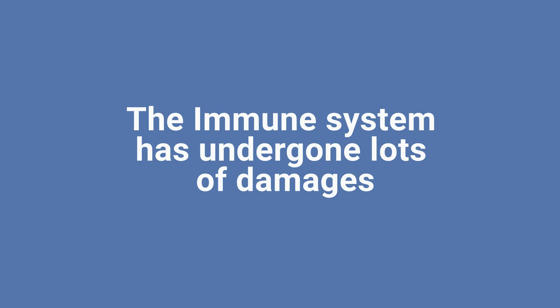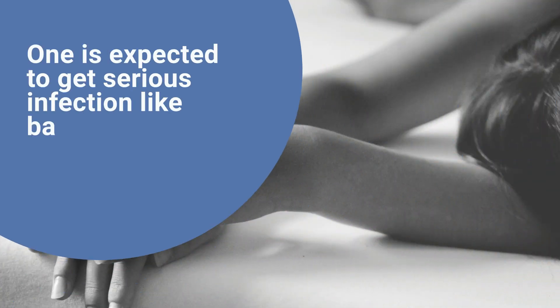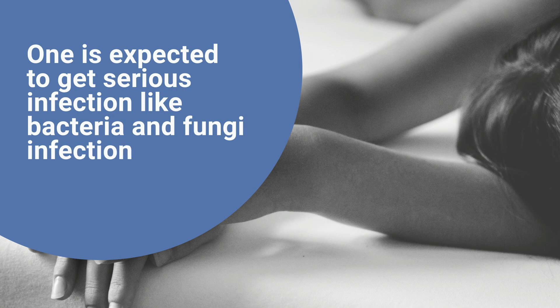The fourth stage is the symptomatic stage. At this HIV infection stage, the immune system has undergone lots of damage. As a result, one is expected to get serious infections like bacterial and fungal infections, known as opportunistic infections — they are opportunistic, as their name implies, taking over the weakened immune system.